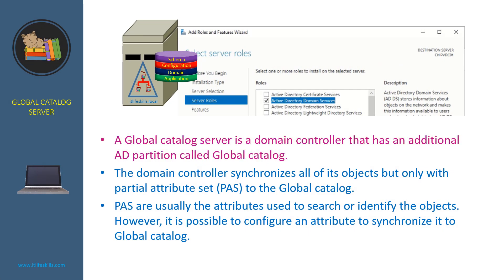A global catalog server is a domain controller that has an additional AD partition called global catalog. The domain controller synchronizes all of its objects, but only with a partial attribute set or PAS, to the global catalog. PAS are usually the attributes used to search or identify the objects; however, it is possible to configure an attribute to synchronize it to the global catalog.